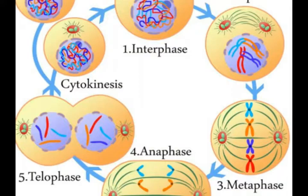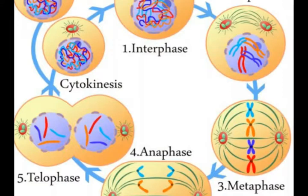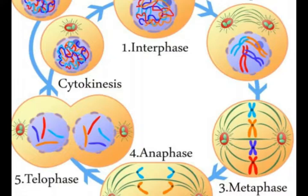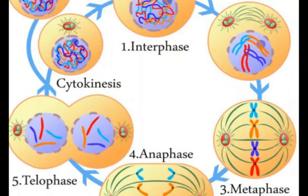FtsZ plays a role in prokaryotic cell division, creating a structure called the FtsZ ring that is vital to the formation of new cell walls. The FtsZ ring is also used in some eukaryotic cells for the division of chloroplasts and some varieties of mitochondria.